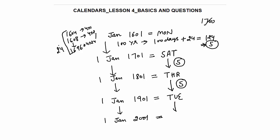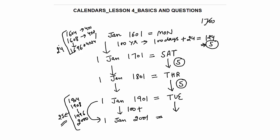Now here the twist will come. From 1901 to 2001, again I have 100 complete years — so 100 odd days plus extra. How many leap years come here? There will be 25 leap years: 1904, 1908, ..., 1996 will be leap years, and very importantly, year 2000 will also be a leap year. So total 25 times 29th February comes. Total 125 odd days divided by 7: 7×17=119, there will be 6 odd days.